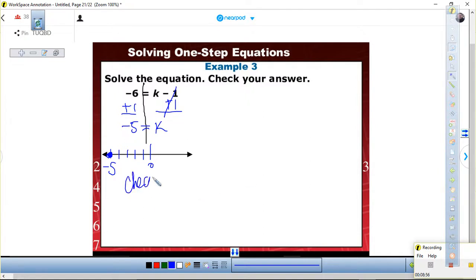Let's check. So write your equation. Negative six equals K minus one. Substitute which value? We substitute negative five in there. Negative five and negative one, that's negative six. Is that equal to negative six? Yes, that is true.